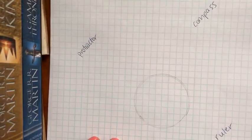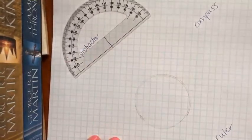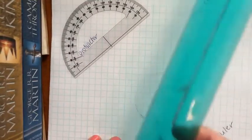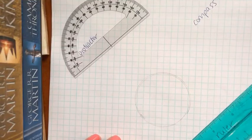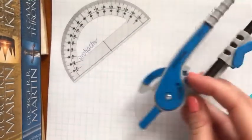So we need some tools. We need our protractor from the last video. We need our ruler which is a straight edge, but we do measure when we're constructing a triangle, and we need our compass.